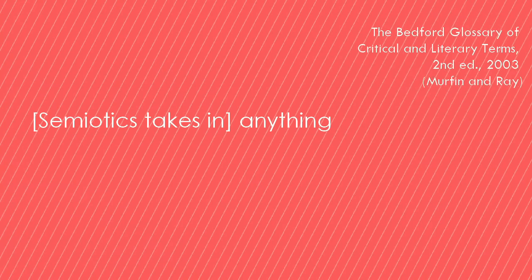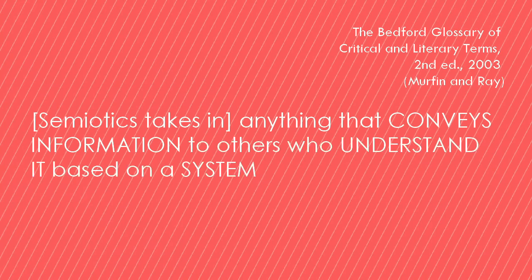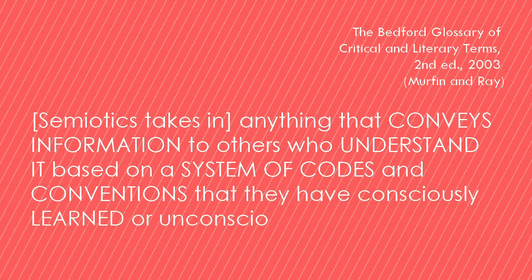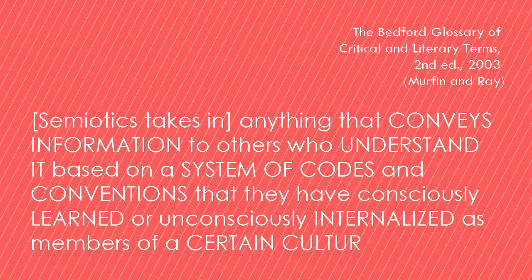Semiotics is really useful because it's the study of signs. Now signs are not just stop signs and billboards and streetlights. As one definition puts it, semiotics takes in anything that conveys information to others who understand it in turn based on a system of codes and conventions that they have consciously learned or unconsciously internalized as members of a certain culture. Signs can be words and utterances, but as Barthes puts it, semiotics is interested in any system of signification — images, gestures and body language, musical sounds, objects and artifacts, even articles of clothing. Also hashtags.